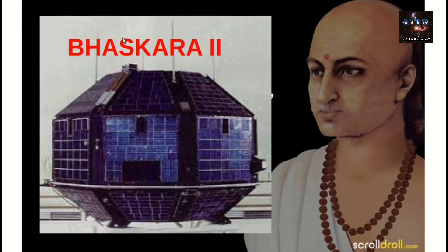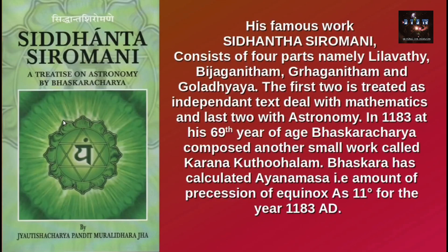The major astronomer next is Bhaskara 2 of the 12th century AD. Bhaskara 2's famous work, the Siddhanta Shiromani, consists of four parts: Lilavati, Bijaganita, Grahaganita, and Goladhyaya. The first two are treated as independent texts dealing with mathematics, and the last two with astronomy. In 1183, at his 69th year of age, Bhaskaracharya composed another small work called Karanakutuhala.